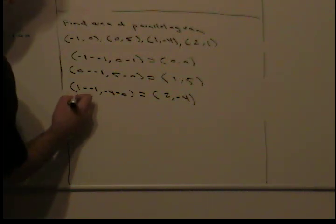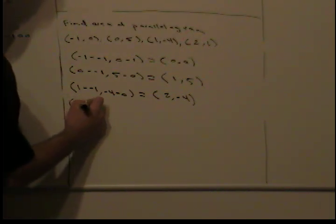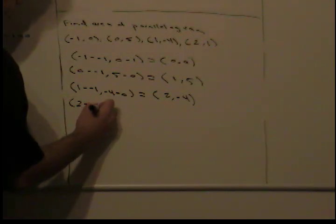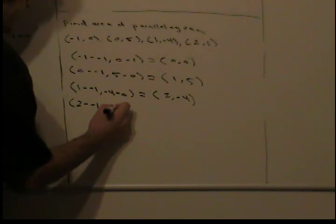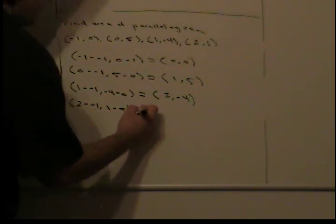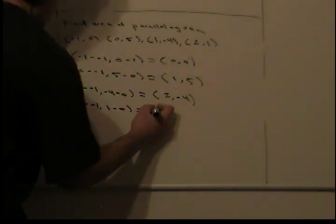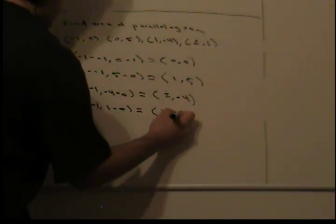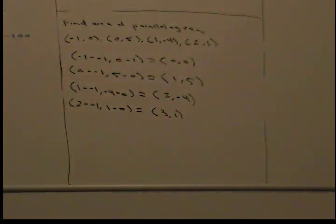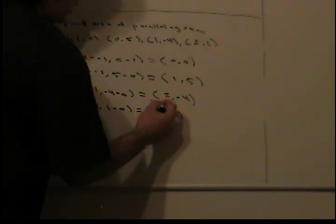Finally, our last vertices is (2, 1). So, we say 2 minus -1 and 1 minus 0. When we do this, we get (3, 1).